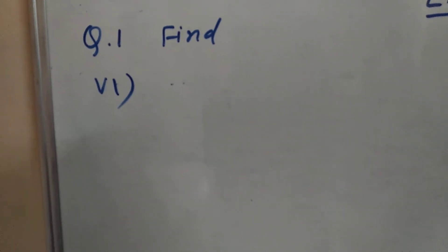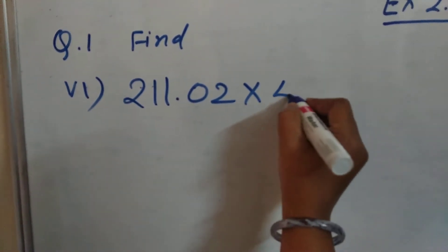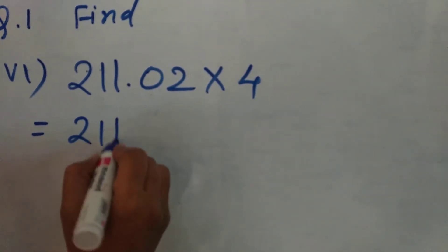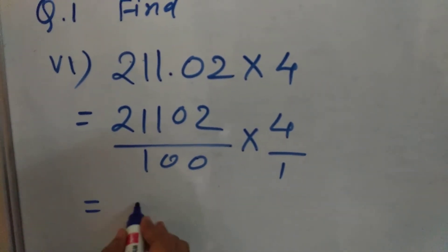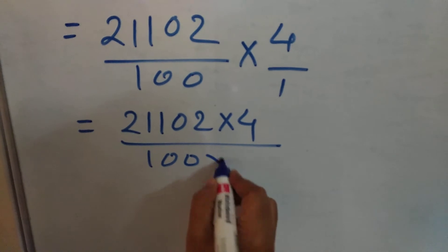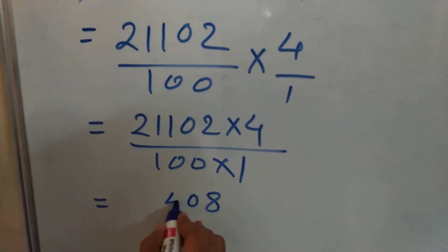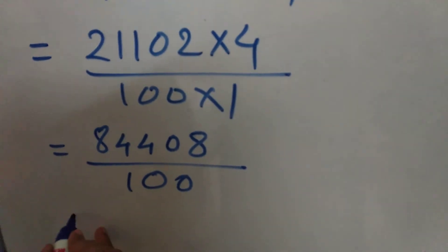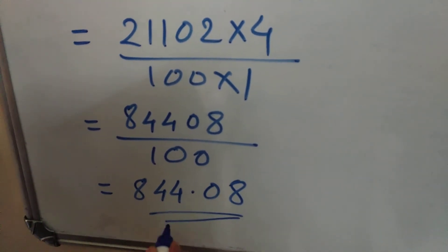Now the sixth sum: 2110.2 multiplied by 4. Convert this into a fraction: 21102 upon 100 multiplied by 4. Carry out the multiplication to get 84408 upon 100. Convert back to decimal — 844.08 is the answer.